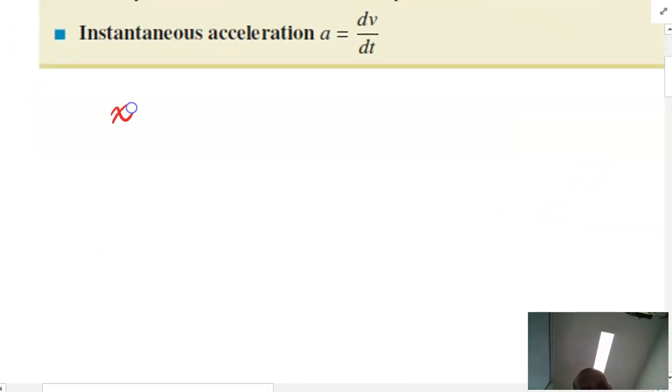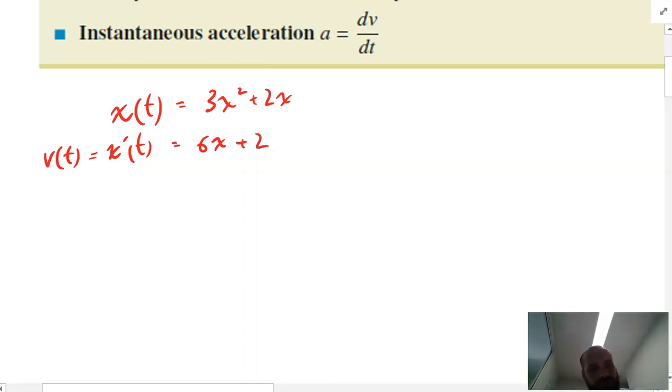If you have a function for displacement, 3x squared plus 2x, the derivative of that, x dash t, is equal to the velocity function, which in this particular case would be 6x plus 2.